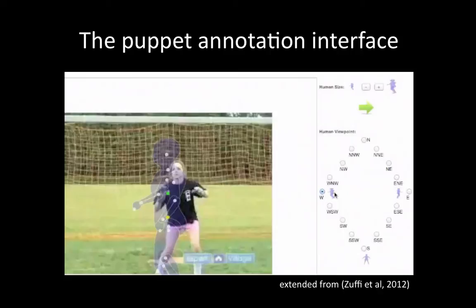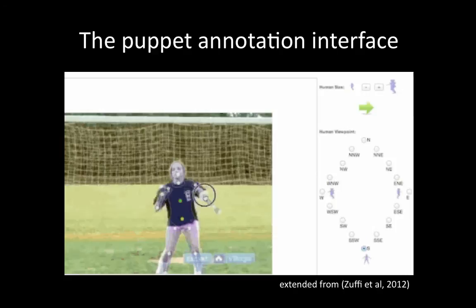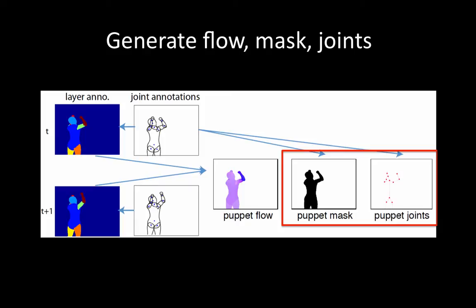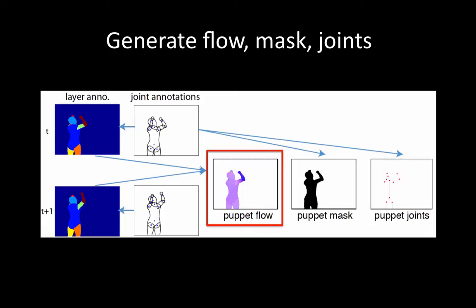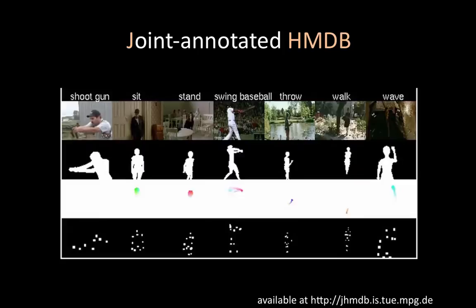We extended the puppet tool described in Sufi et al. for video annotation using Amazon's Mechanical Turk tool. Users can choose a particular viewpoint size for the puppet, then drag the joints of the puppet to match the joints of the person. From a single puppet, we obtain the foreground mask and joint positions. From puppets of two adjacent frames, we compute the optical flow using the correspondence of points on the puppet model. This video shows some of our annotations.